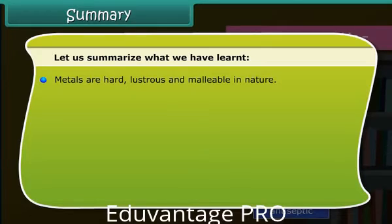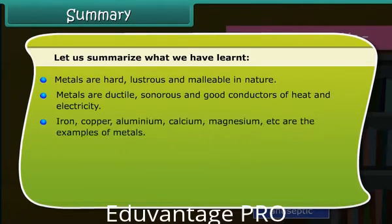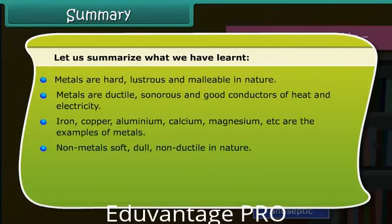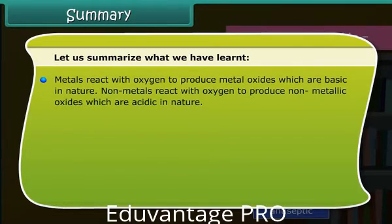Summary: Let us summarize what we have learned. Metals are hard, lustrous, and malleable in nature. Metals are ductile, sonorous, and good conductors of heat and electricity. Iron, copper, aluminium, calcium, magnesium, etc. are examples of metals. Non-metals are soft, dull, and non-ductile in nature. Non-metals are non-sonorous, non-malleable, and poor conductors of heat and electricity. Metals react with oxygen to produce metal oxides, which are basic in nature. Non-metals react with oxygen to produce non-metallic oxides, which are acidic in nature.